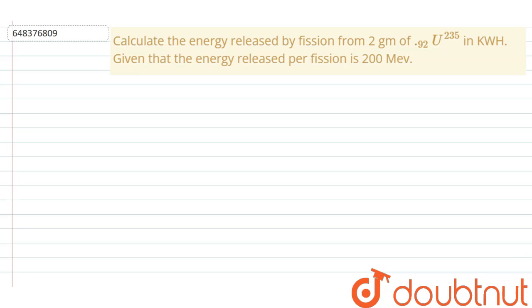is given that calculate the energy released by fission from 2 grams of uranium in kilowatt hour. Given that the energy released per fission is 200 mega electron volt. So now let's see the answer. In the question